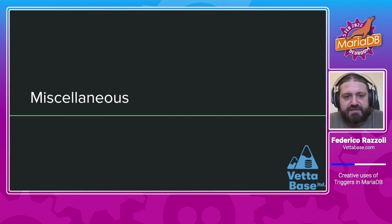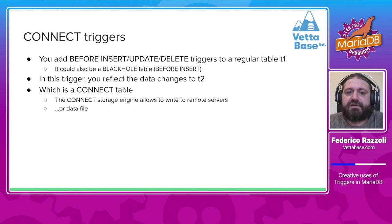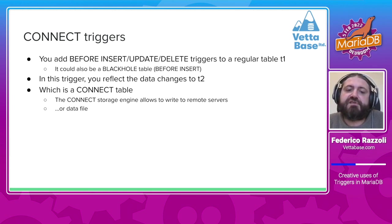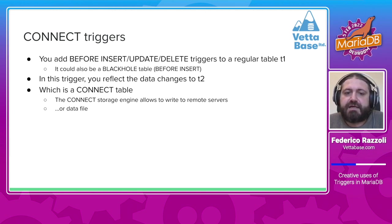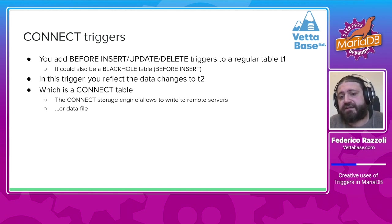Let's see some other miscellaneous triggers. 'Connect triggers': you have a regular table called t1, and you create a BEFORE INSERT, BEFORE UPDATE, or BEFORE DELETE trigger. This trigger has SQL code to reflect the changes to another table called t2, which is a copy.